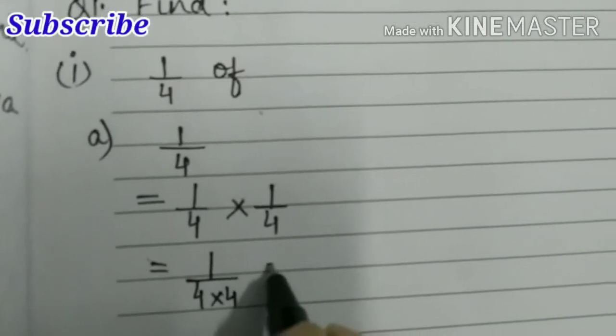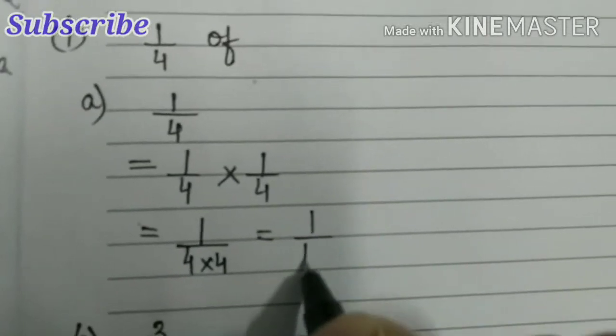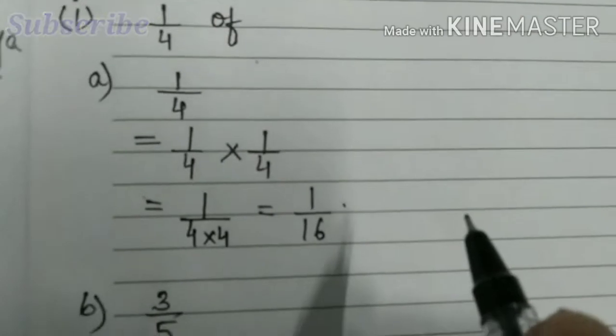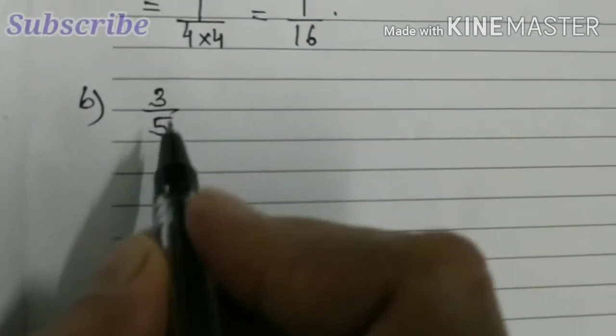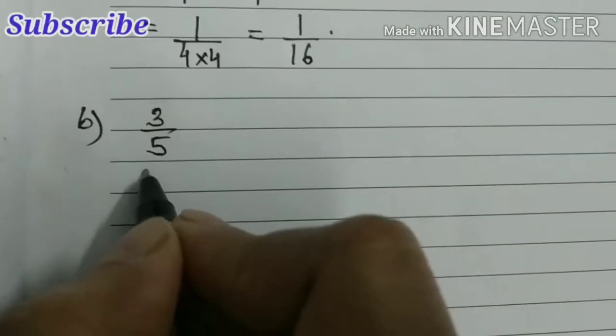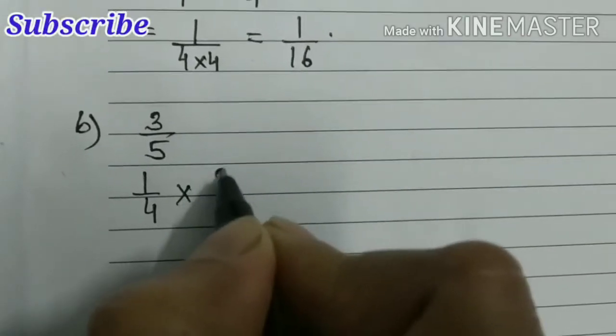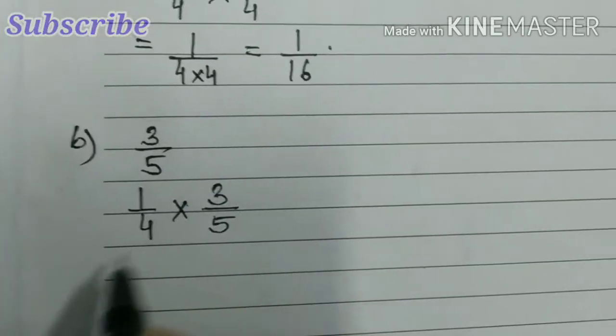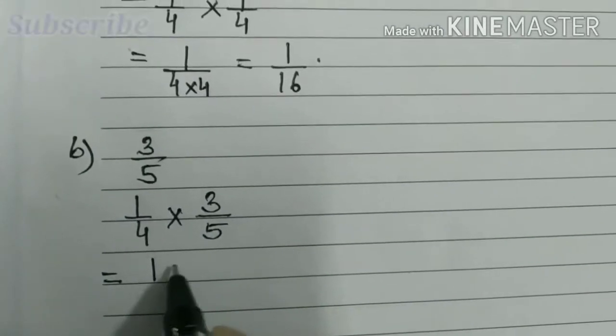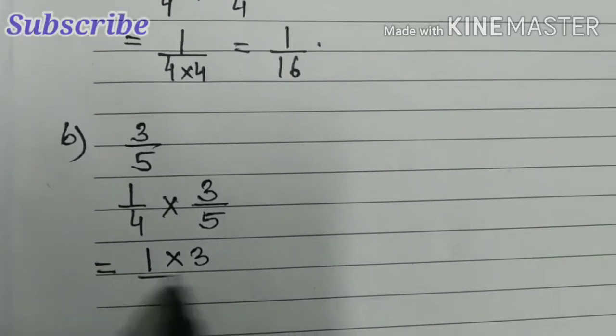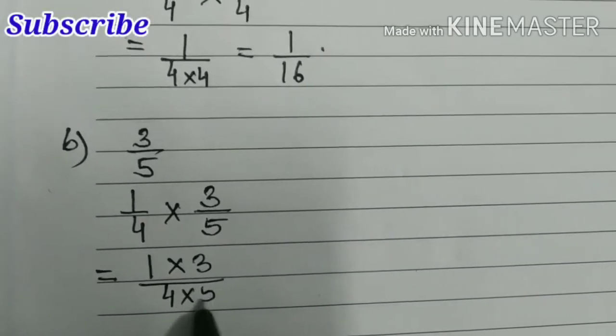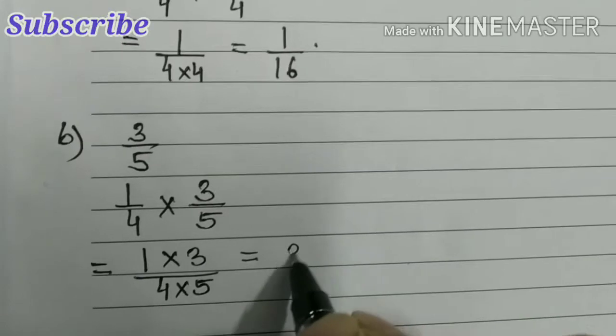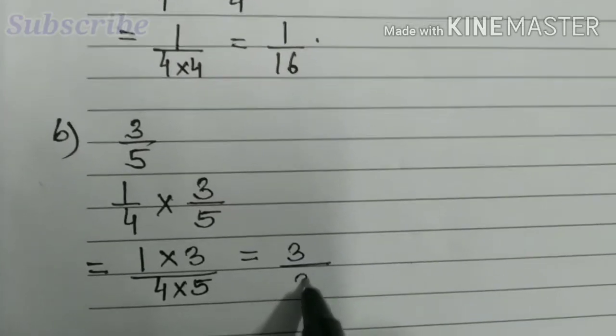Second, one-fourth of three-fifths. So one-fourth times three-fifths, that is equal to 1 times 3 by 4 times 5, that is three-twentieths.